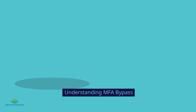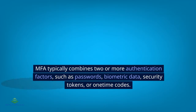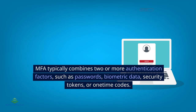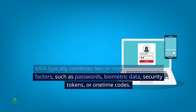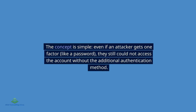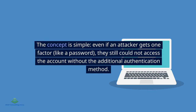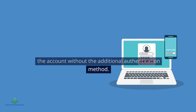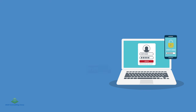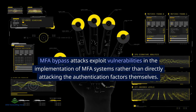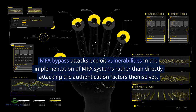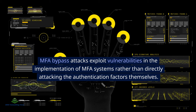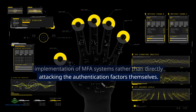Understanding MFA Bypass: MFA typically combines two or more authentication factors, such as passwords, biometric data, security tokens, or one-time codes. The concept is simple — even if an attacker gets one factor like a password, they still could not access the account without the additional authentication method. MFA bypass attacks exploit vulnerabilities in the implementation of MFA systems, rather than directly attacking the authentication factors themselves.